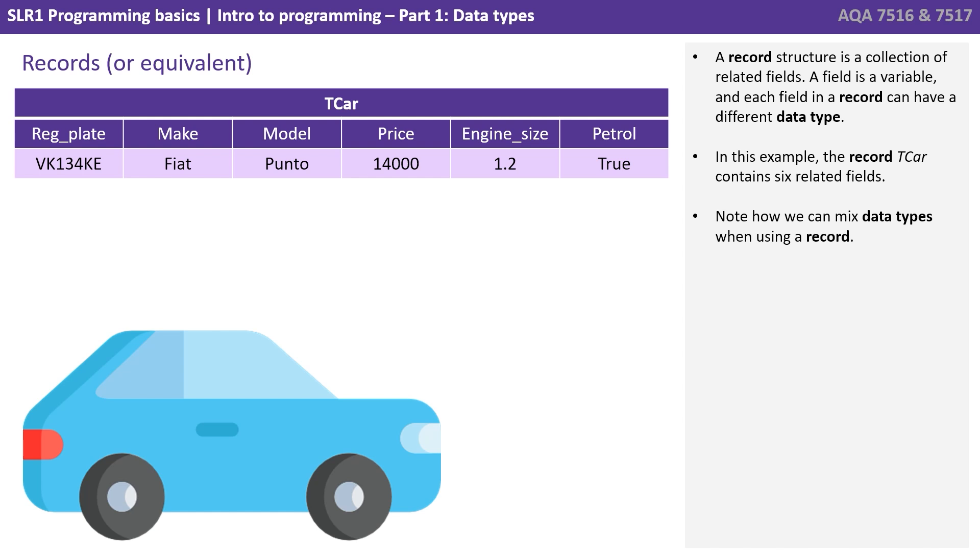Next, we have what's called the record data type. A record structure is a collection of related fields. And a field is a variable and each field in a record can have different data types. In this example, we have a record called T-car and it contains six related fields. Note how we can mix the data types when using a record. We're using strings here, a boolean and a real or float.